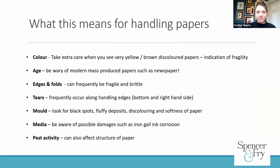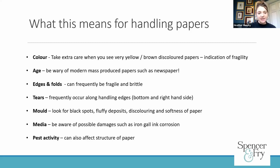So as a summary of ageing papers, things to look out for: colour — you may want to take extra care when handling papers that are yellow, brown, or discoloured, as it could indicate fragility. Age — be wary of modern mass-produced papers like newspapers, which can be in quite poor condition. Edges and folds can be very fragile and brittle. Tears can often occur along the handling edges of papers. Be aware of anything like mould that might be growing. And be aware of possible media damage from things like iron gall inks or any pest activity.